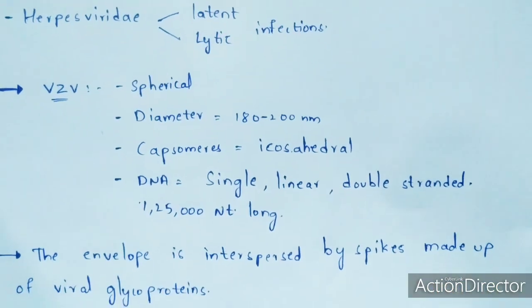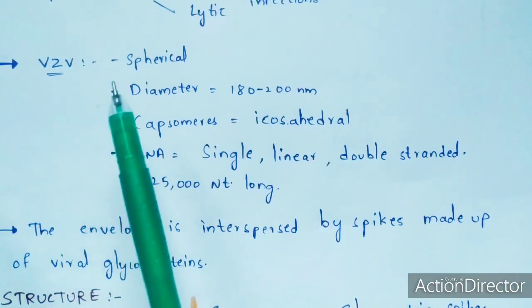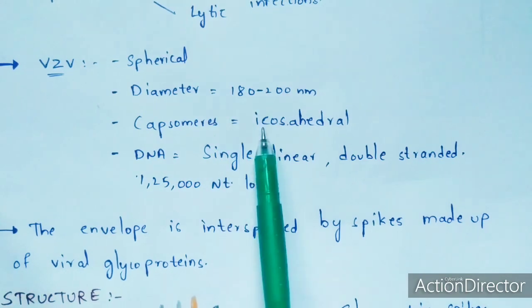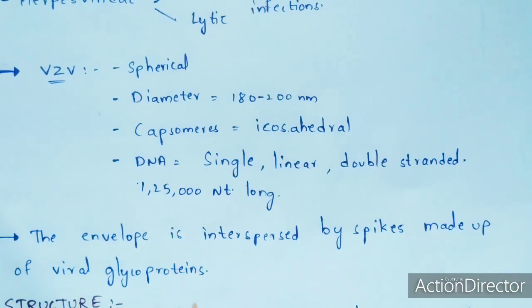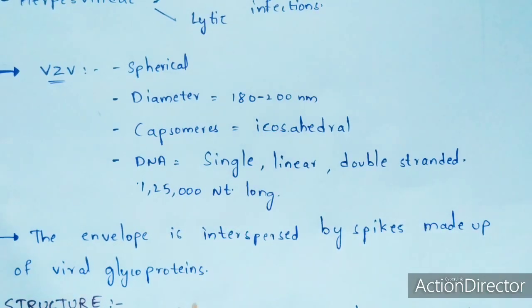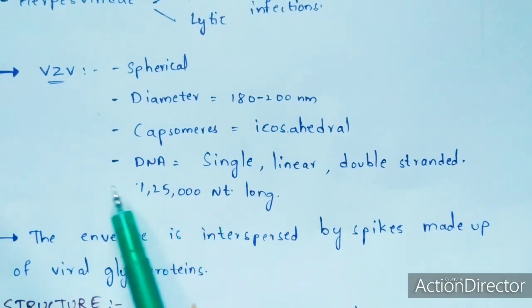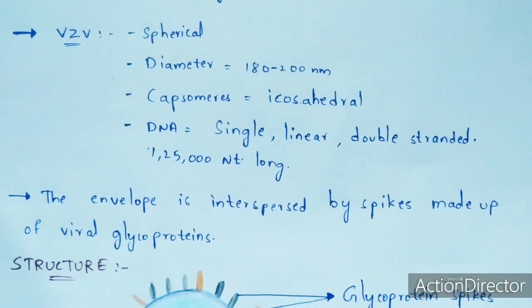Coming to the structure of VZV — varicella zoster virus — the shape is spherical with a diameter ranging from 180 to 200 nanometers. The capsomeres are icosahedral in shape. The DNA is single linear double-stranded, and it is 125,000 nucleotides long. Nucleotides are the nitrogenous bases such as adenine, guanine, cytosine, thymine, and uracil.